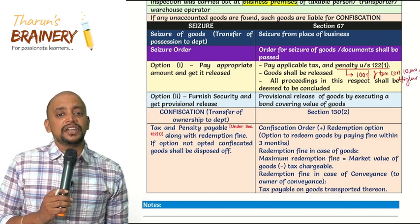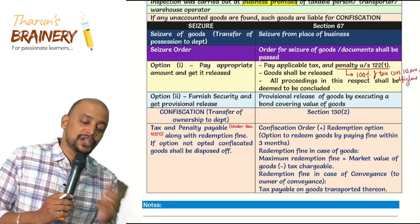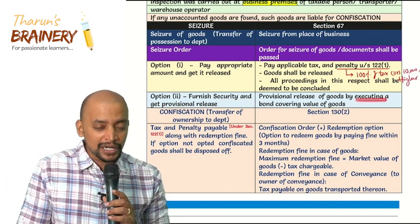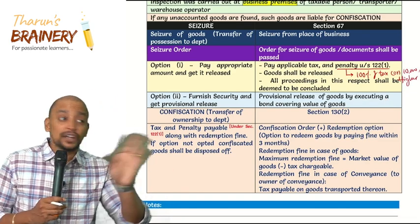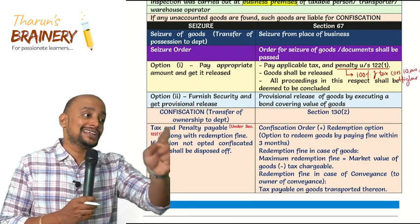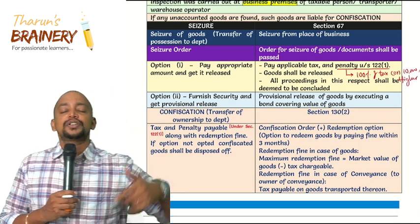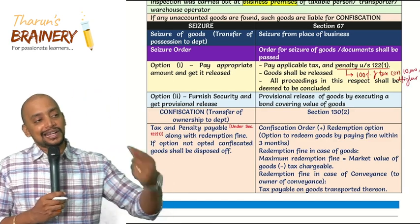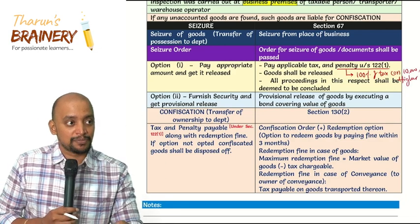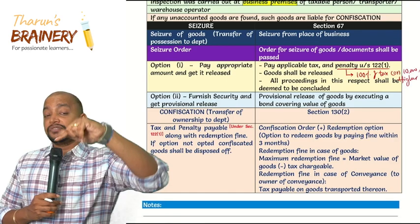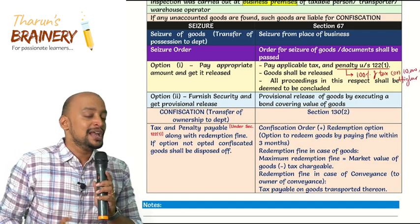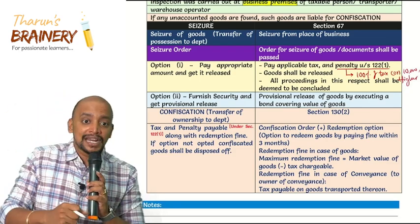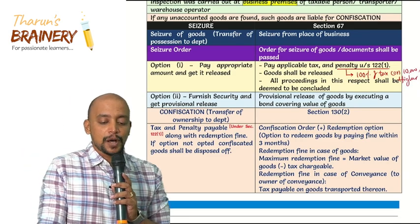Suppose he does not have money to pay the tax and penalty — he has another option: furnish security and get provisional release. He will not pay tax and penalty; instead, he will execute a bond and the goods will be released. But the proceedings are not concluded because he is yet to pay the tax and penalty. The goods will be released provisionally — the person can say he will sell the goods, realize the money, and then pay. He needs to execute a bond and assure the department with proper security. If he does not make payment using that bond and security, they will recover the money from him. So option one is pay tax and penalty; option two is execute a bond for provisional release and pay later.